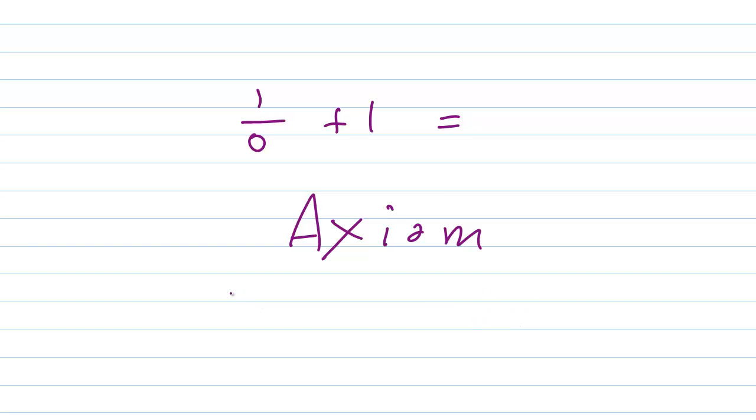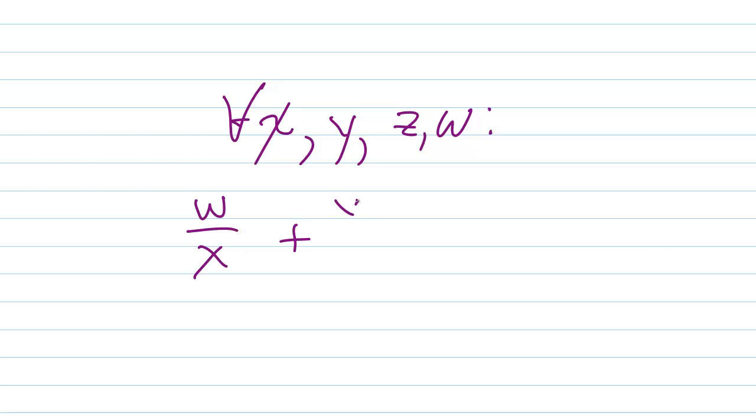And that is, it works like this. Here is the axiom. Let me just back up a little bit and show you this axiom. For all X, Y, Z, and W, the following holds true. W over X plus Y over Z equals WZ plus XY, that quantity, divided by XZ.